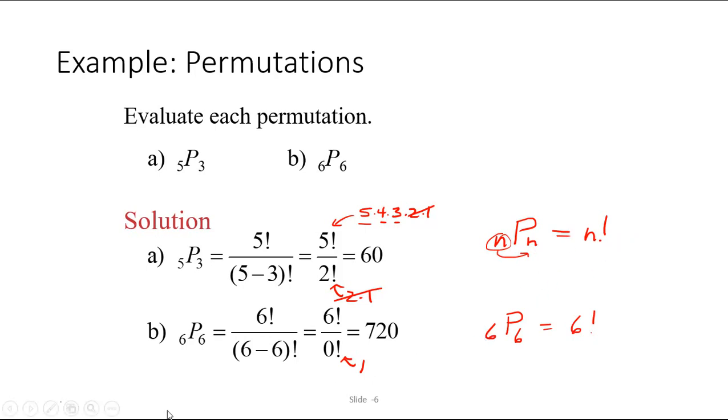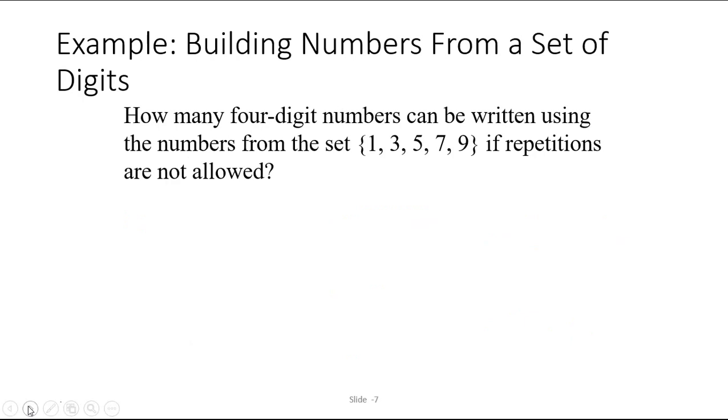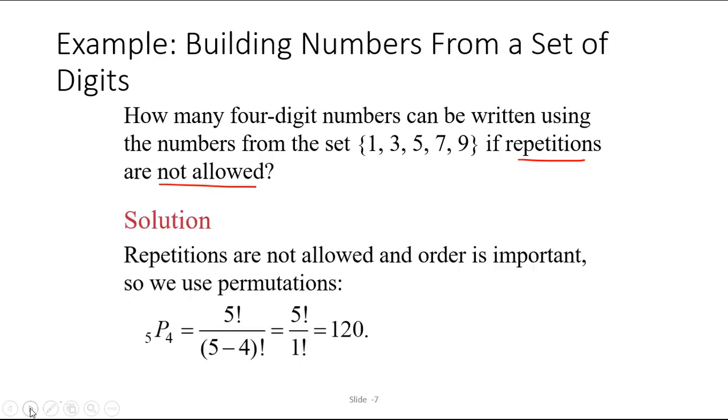But most of the time, we're not going to just say, oh, calculate 7P3, we're going to give you a word problem. So how many four-digit numbers can be written using the numbers from the set 1, 3, 5, 7, 9, if repetition is not allowed? This is an important component, if repetition is not allowed. For permutations, you're arranging objects, and they're unique objects, so repetition is never allowed. So you can't use permutations unless you have this particular characteristic. Since repetitions are not allowed, and since order is important, we can use permutations for this problem.